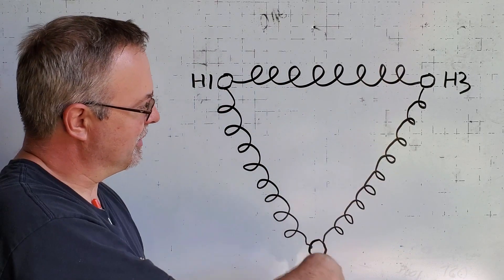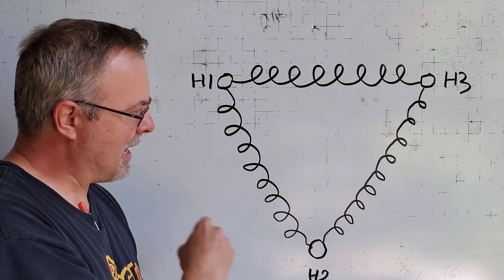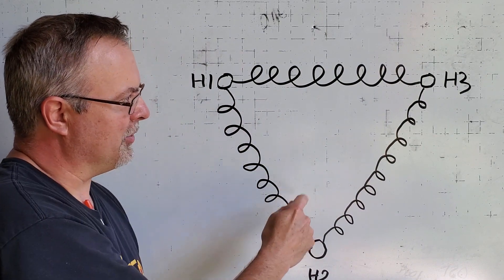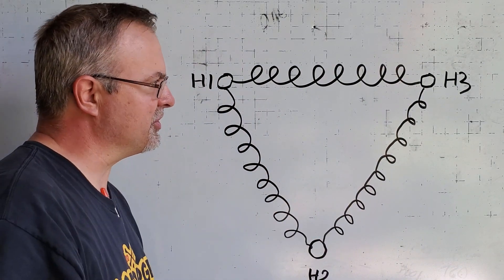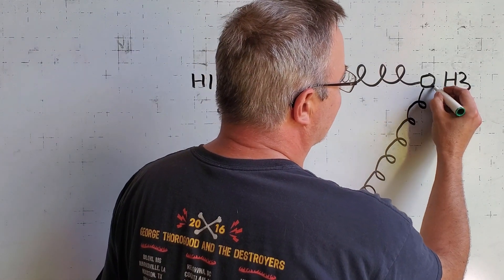So when you look at the high voltage side of one of these transformers, it's a delta configuration and the coils are connected like this. Now there's no ground in this system.